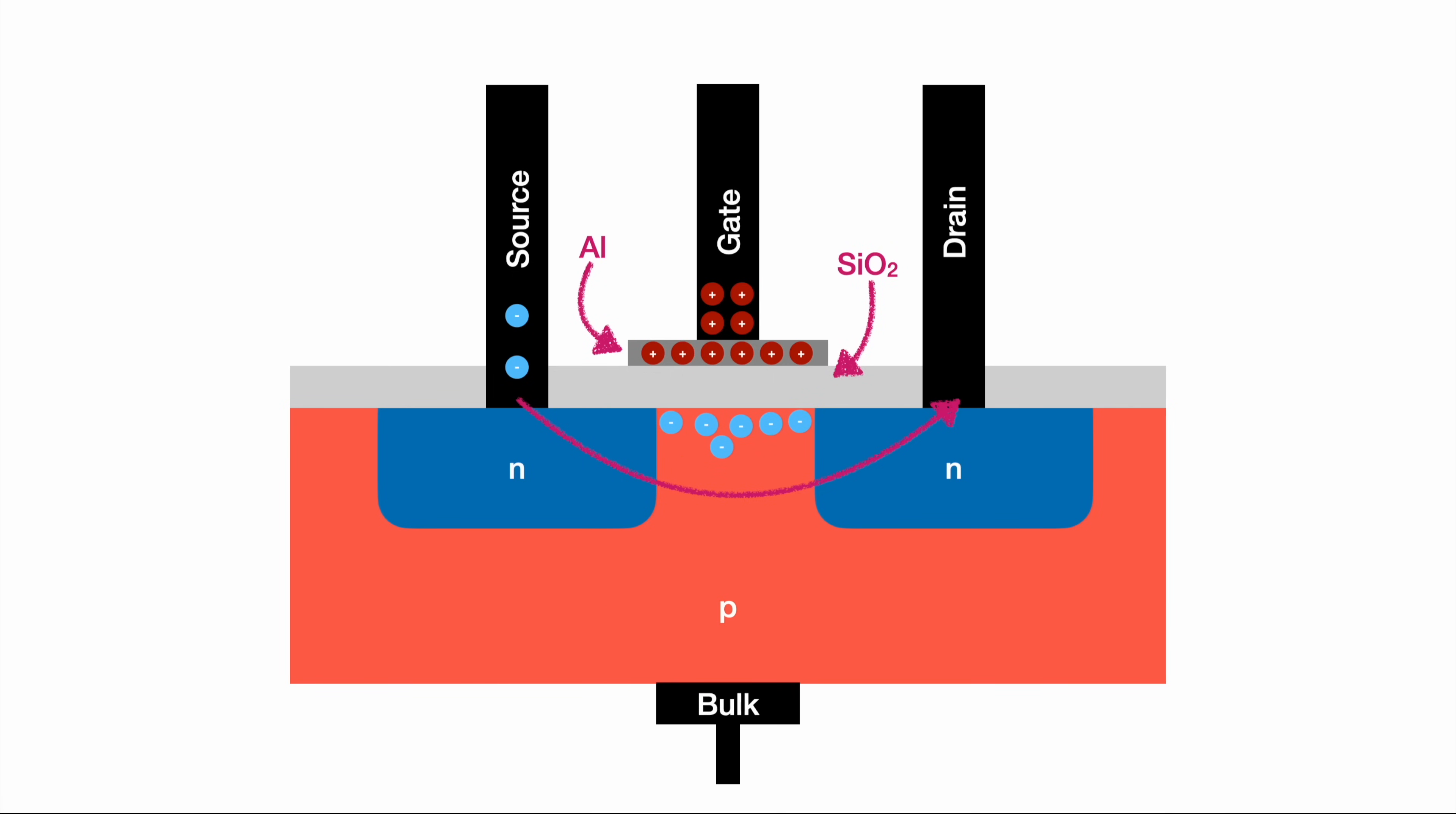Those electrons bridge the space between our two negative areas, between the source and the drain, enabling electrons to flow from the source towards the drain.